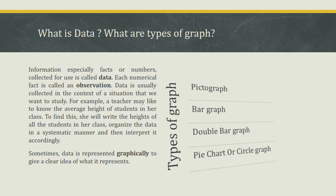Information, especially facts or numbers collected for use, is called data. Each numerical fact is called an observation. Data is usually collected in the context of a situation that we want to study. For example, a teacher may like to know the average height of students in her class. To find this, she will write the heights of all students, organize the data systematically, and then interpret it accordingly.